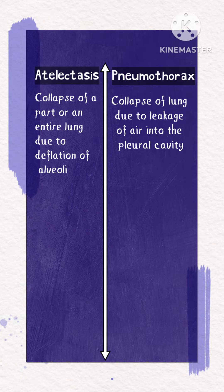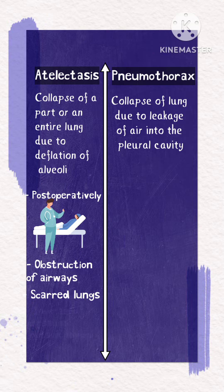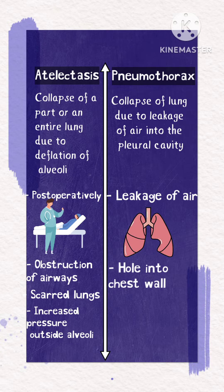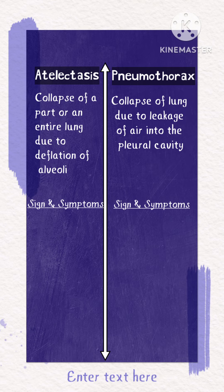Atelectasis is usually seen after surgeries, and its causes include obstruction of airways, scarring of lung tissues, increased pressure outside the alveoli, and inadequate surfactants. Pneumothorax, on the other hand, is caused by leakage of air due to a hole in the chest wall, or because of a rupture of the alveoli from too much pressure, such as what happens with mechanical ventilation.